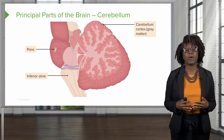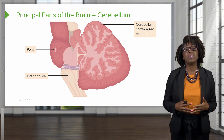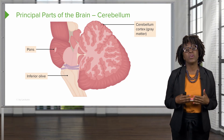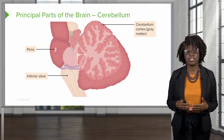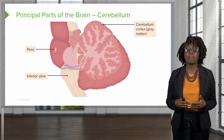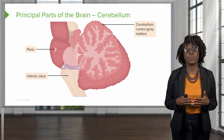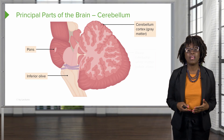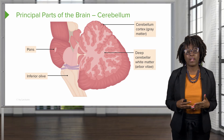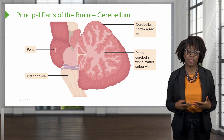The next part of the brain is the cerebellum. The cerebellum sits inferior to the cerebrum and posterior to the brain stem. The cerebellum has two major parts: the outer cerebellar cortex, which is gray matter, and on the inside the white matter, which we refer to as the arbor vitae because of its tree shape.